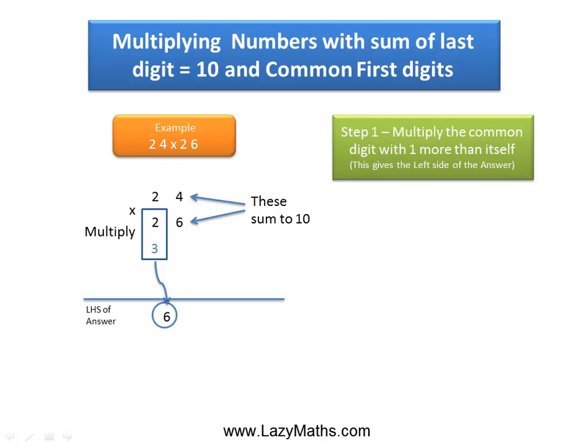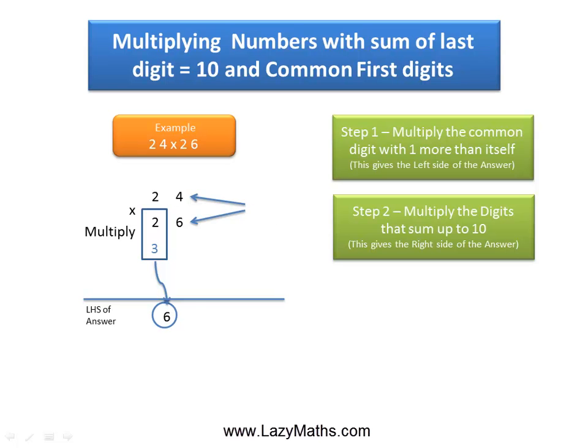The next step is to simply multiply the 4 and 6 together. Four times 6 is 24, which gives us the right-hand side of the answer.